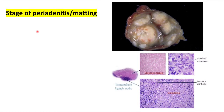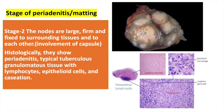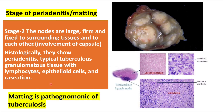In the next stage — the stage of periadenitis or matting — we observe large, firm swellings that are fixed to the surrounding tissues and to each other. This matting, or being fixed to each other, is due to involvement of the capsule of the lymph nodes. Remember that matting is pathognomonic of tuberculosis.